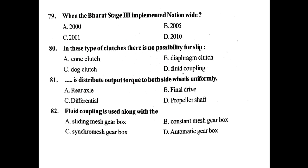At the 79th question: When was the BS3 emission standard implemented? Answer: About 2010. In this type of clutch, there is no possibility of slip — it is a jaw clutch (door clutch). Dash distributes output torque to both side wheels uniformly — it is the differential.